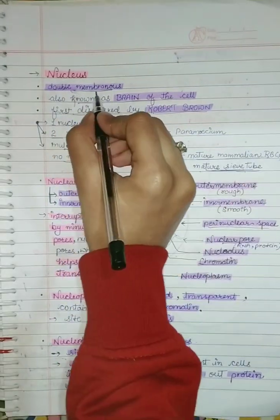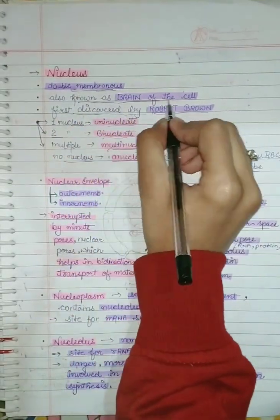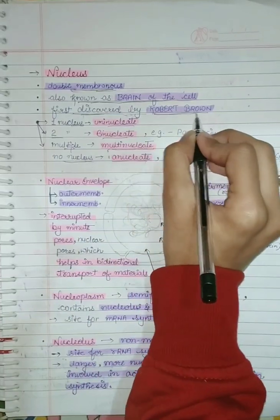Today's topic is Nucleus. It is a double membrane bound structure which is also known as brain of the cell. It was discovered by the scientist Robert Brown.